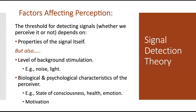Our thresholds can become higher or lower depending on the situation. The signal detection theory suggests that the threshold for detecting incoming information depends not only on the stimulus itself — such as how bright or loud something is — but also on other factors, including the level of background stimulation and the biological and psychological characteristics of the perceiver.